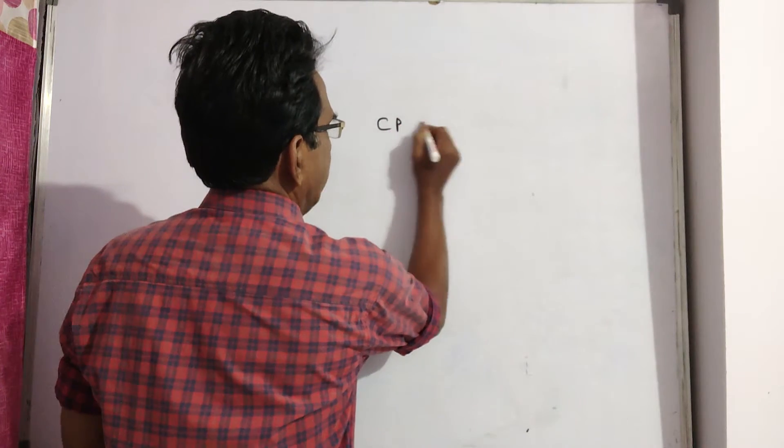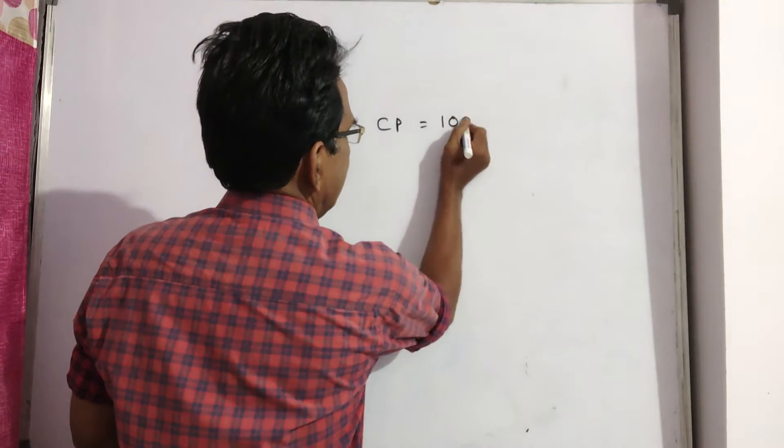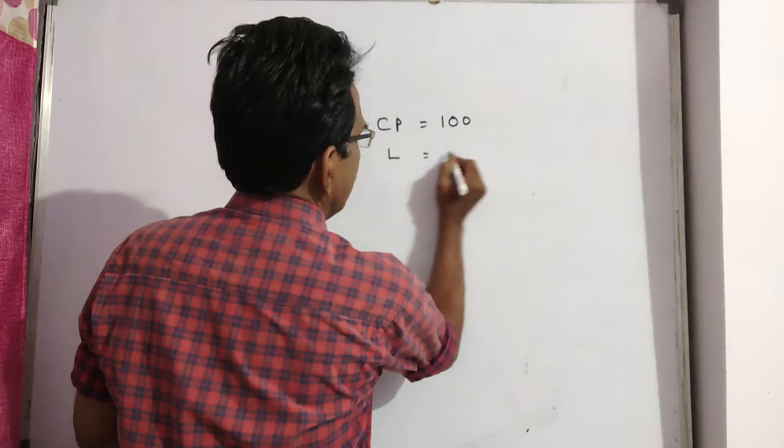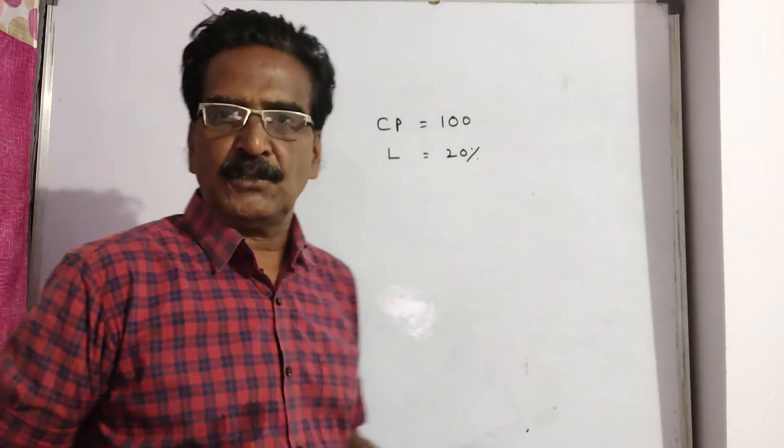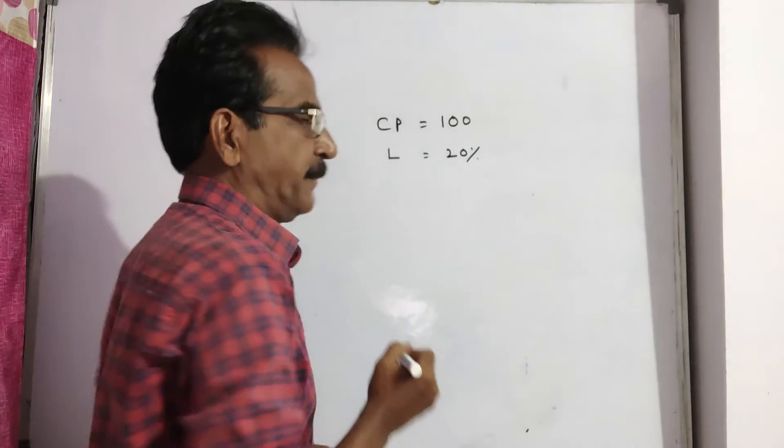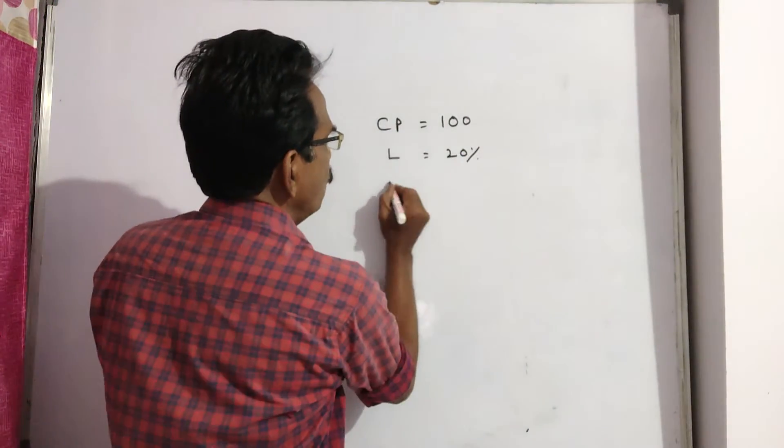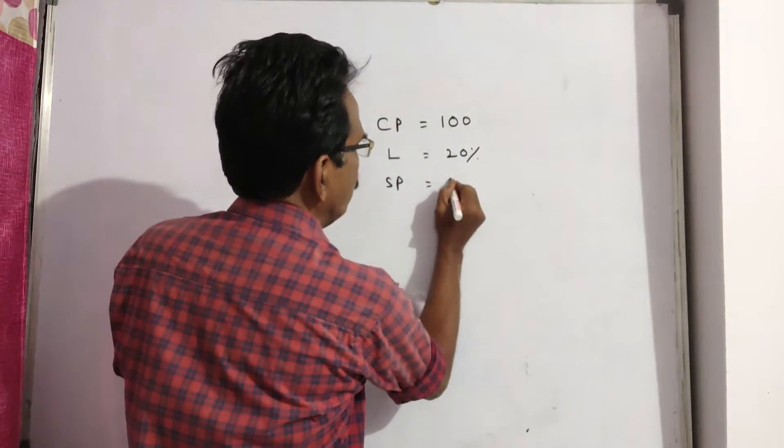Say cost price is 100, loss is 20%. When the article is sold at two-third of that virtual selling price, the sold price is equal to 80.